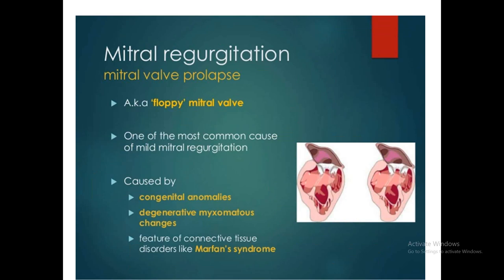Mitral regurgitation also occurs because of mitral valve prolapse in younger people — the second commonest cause of mitral regurgitation. It is caused by connective tissue anomalies, degenerative myxomatous changes, or features of connective tissue disorders like Marfan syndrome, which may be associated with mitral valve prolapse. It is also called floppy valve or Barlow's syndrome.